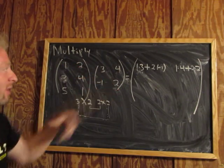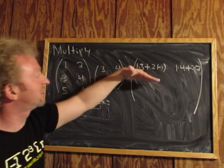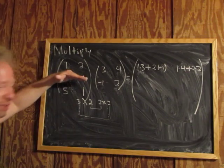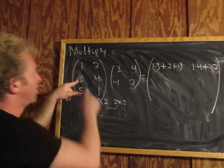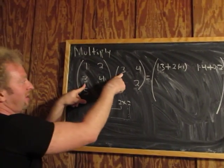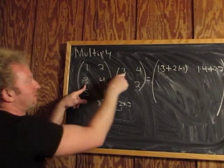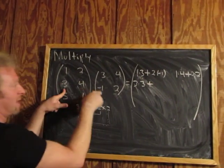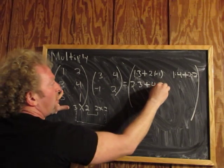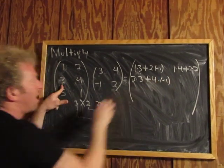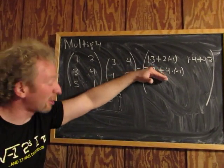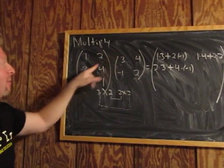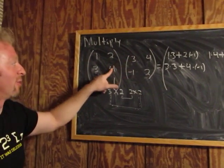1 times 4, plus 2 times 2. Now we're in the second row, first column. So this is the second row, first column: 3 times 3, plus 4 times negative 1.